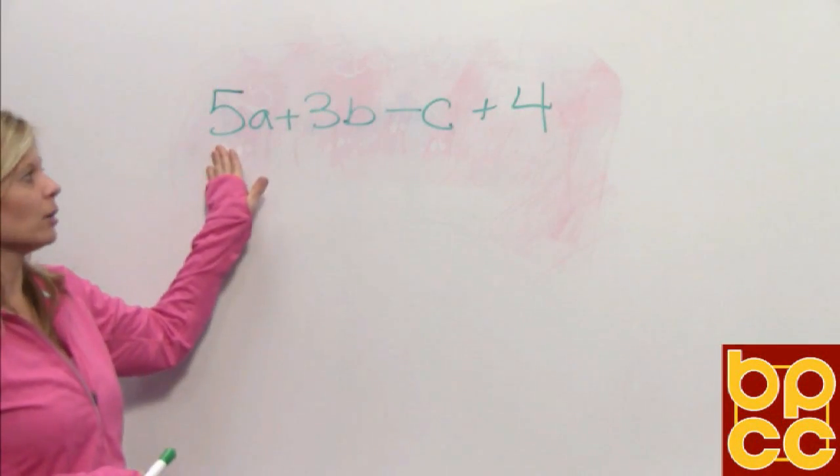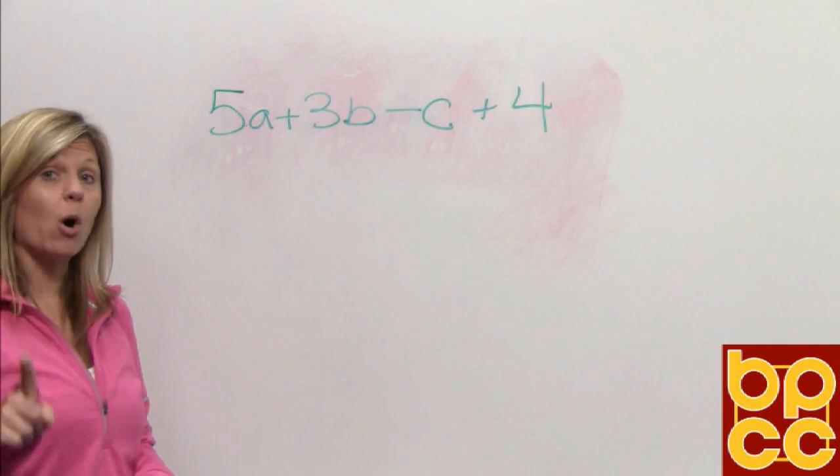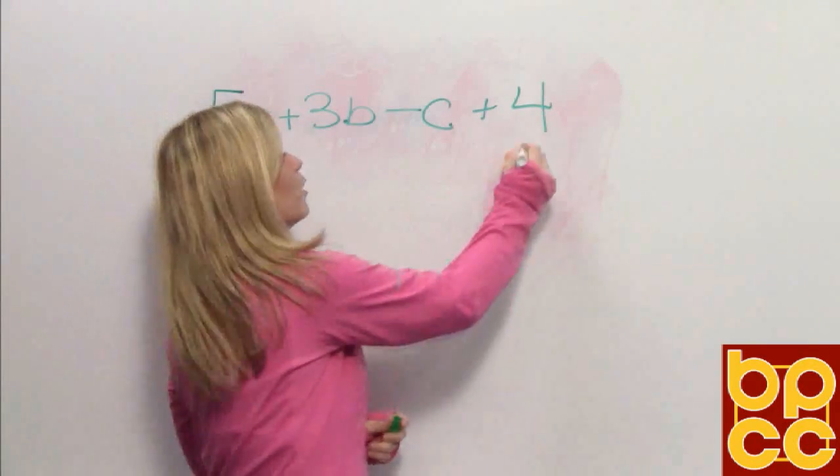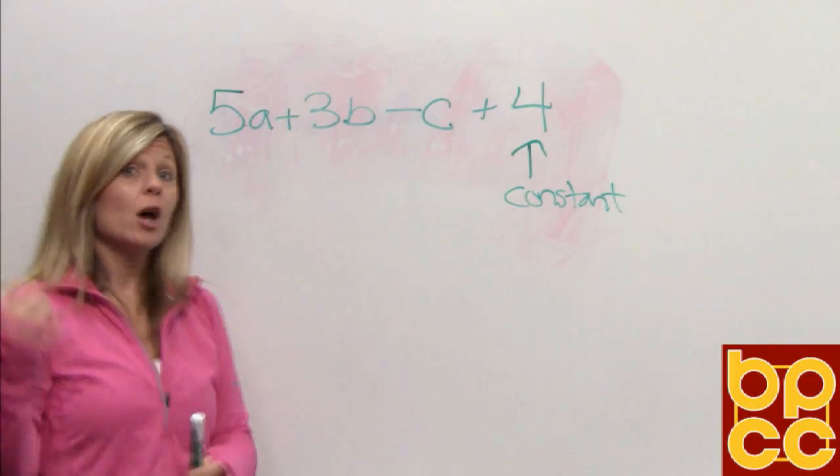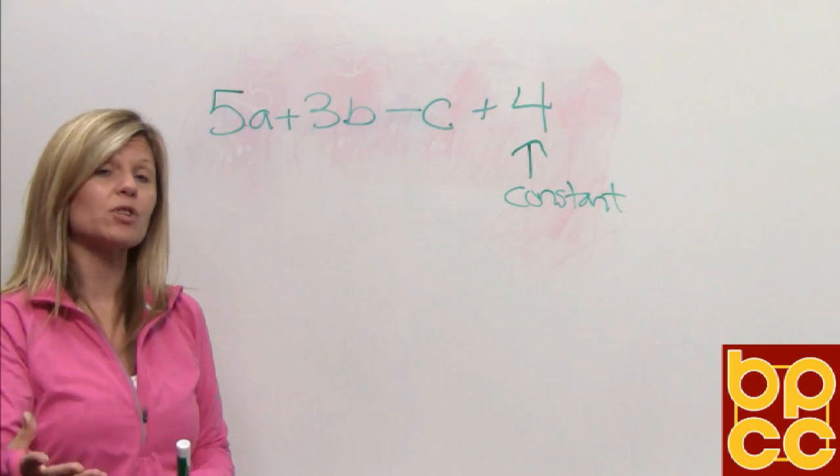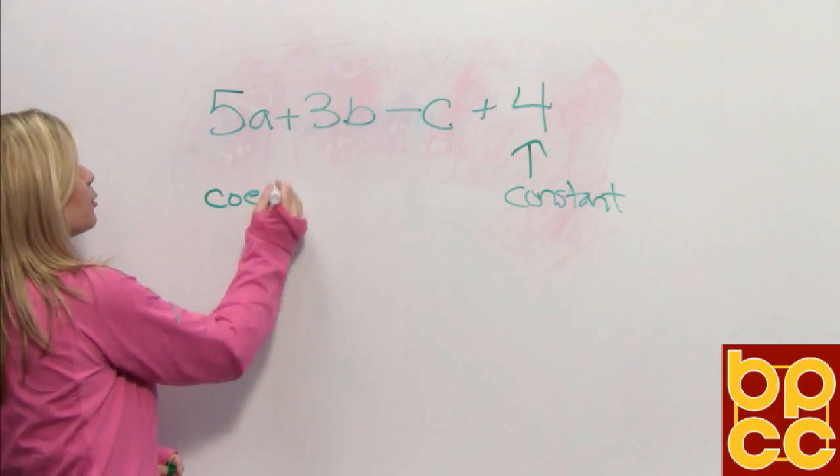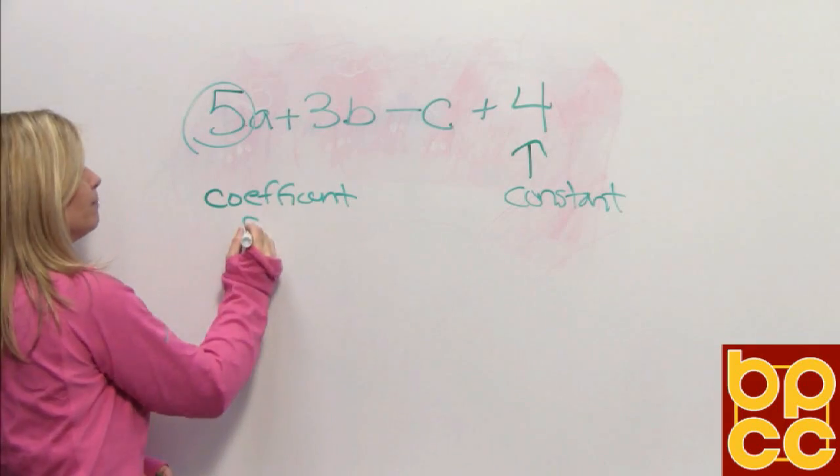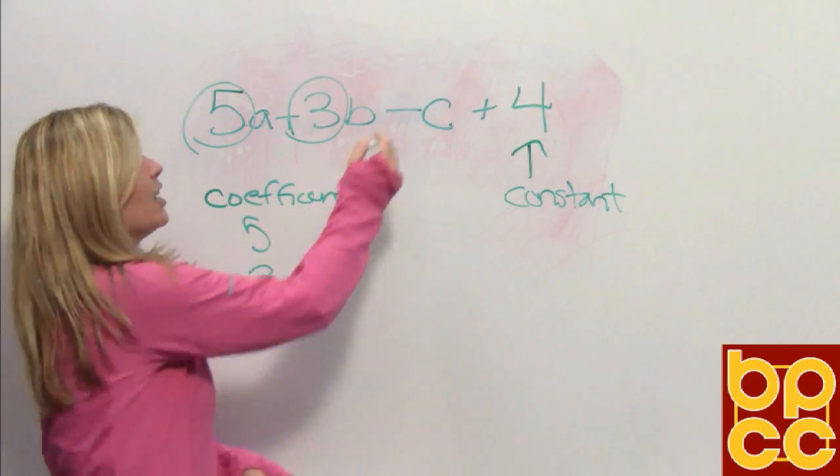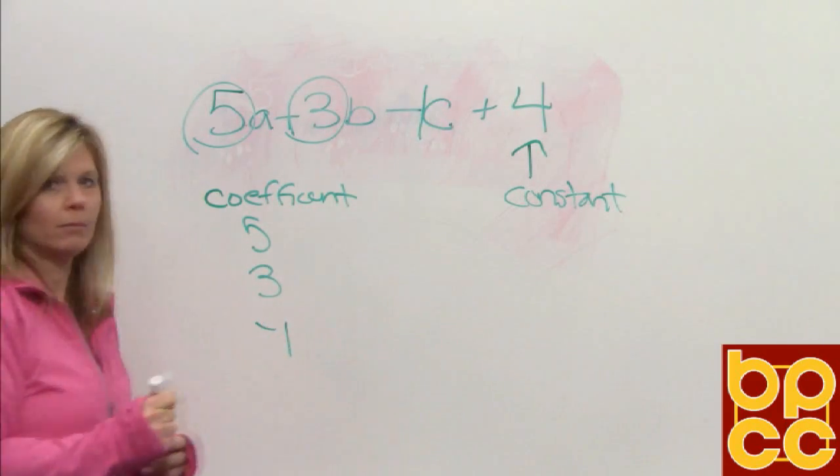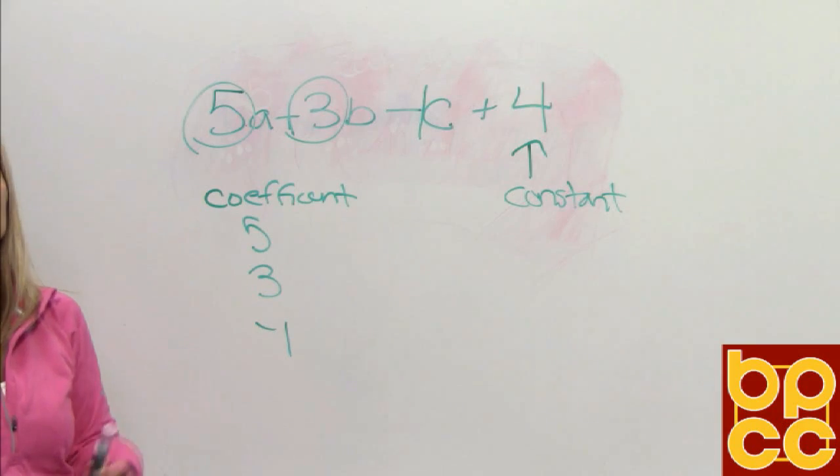If I go back to this polynomial, there is a constant and there are three coefficients. A constant is the number that's all by itself—that would be the 4. But in this polynomial we have three coefficients, three numbers that are working with variables. You know they're working with them because they're right by them connected by multiplication. Our first coefficient is 5. Our second coefficient is 3. And our third coefficient is in front of the C—it is understood to be an invisible 1, so that's negative 1. When you're working with algebra you have coefficients, numbers in front of variables, and constants, numbers that stand alone.